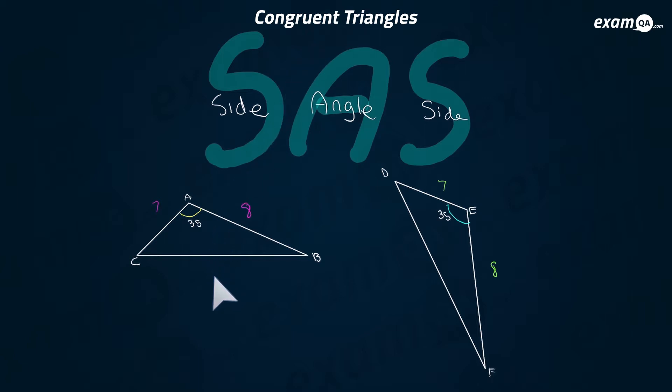Here we have two triangles, ABC and DEF. Let's see if we've got side, angle, side. AC is the same as ED. Then we have the angle, and how do we refer to angle? We can say CAB or BAC. Angle BAC is the same as angle DEF. And lastly, we have AB is the same as EF.